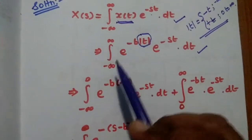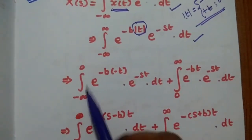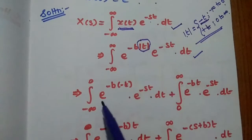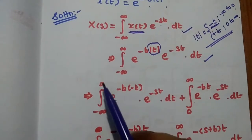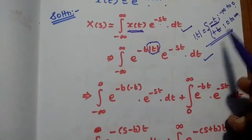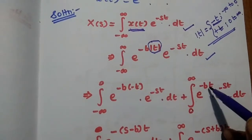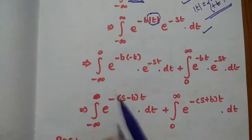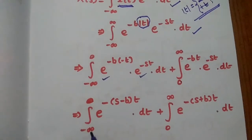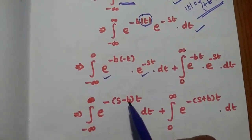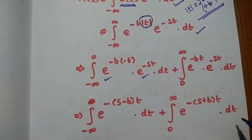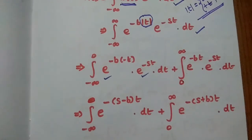We split the interval accordingly. From −∞ to 0, the t value is −t, so we write the integral from −∞ to 0 of e^(−b(−t))e^(−st)dt, plus the integral from 0 to ∞ of e^(−bt)e^(−st)dt. Combining the exponential terms: the first integral becomes e^(−(s−b)t) and the second becomes e^(−(s+b)t), grouping the values together for further simplification.